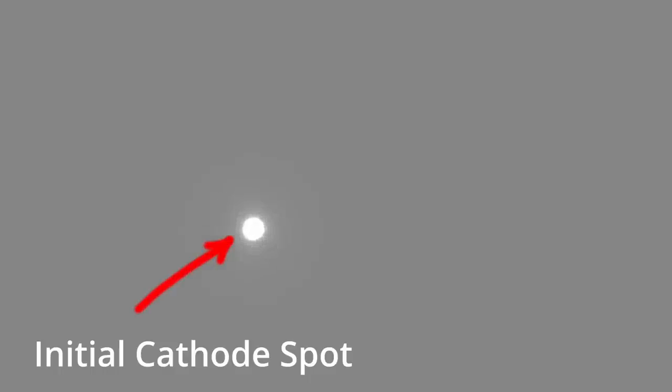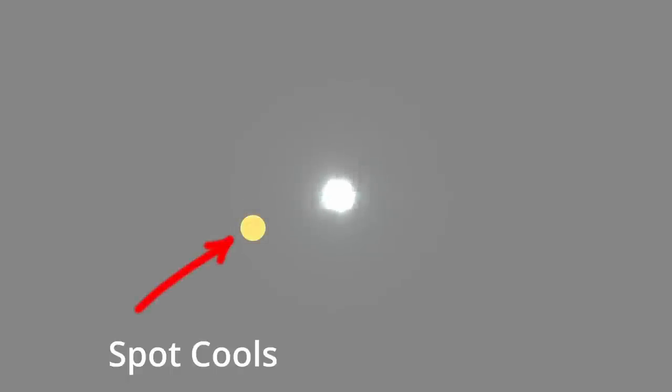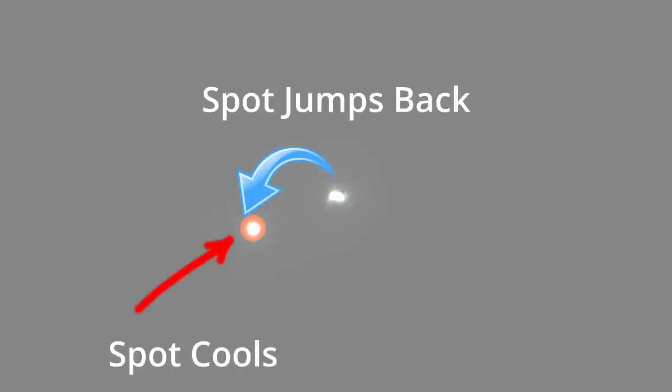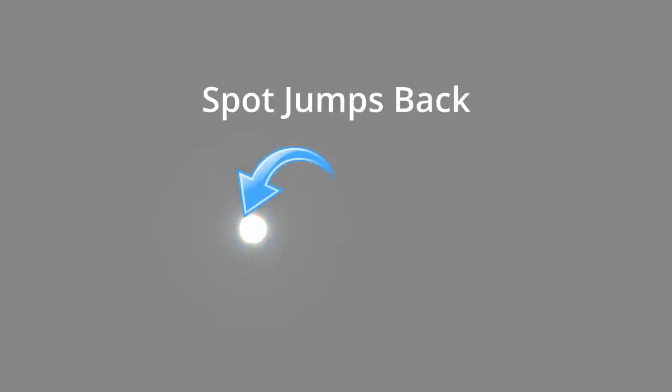There is much we still do not understand about this random walk and self-avoiding walks. Investigations into clean, well-arced cathodes have shown that sometimes, after a short cool-down time, a previously active and still-hot emission site may preferably reignite.